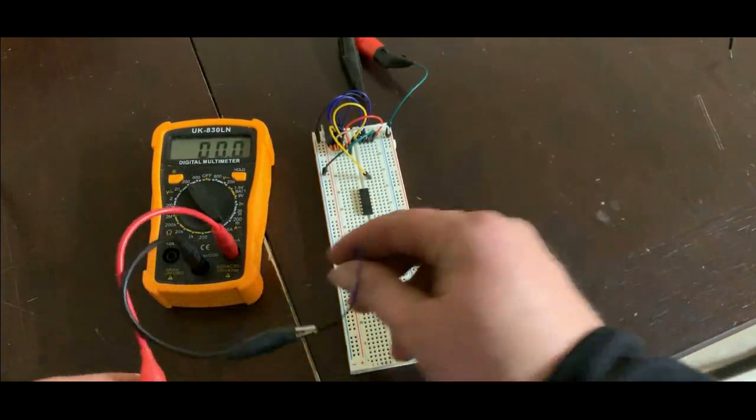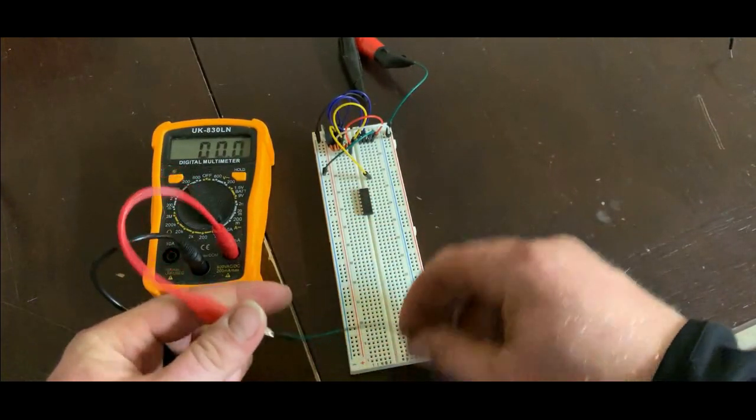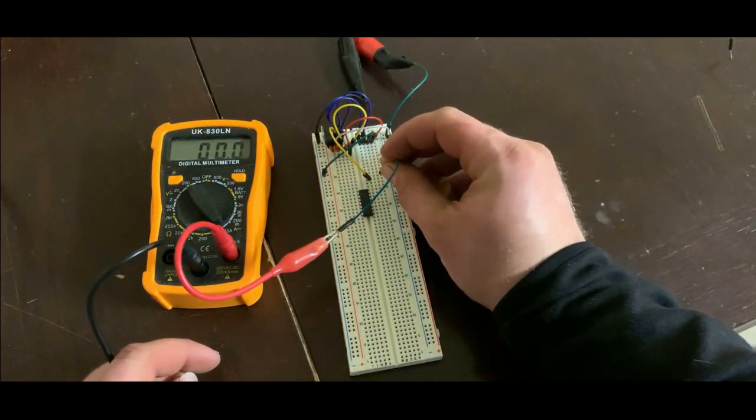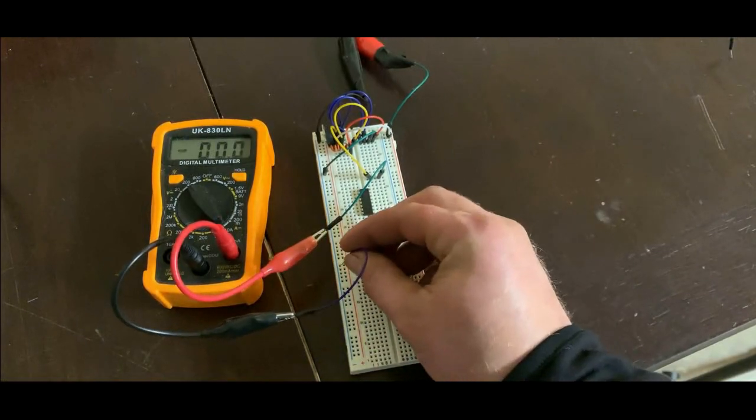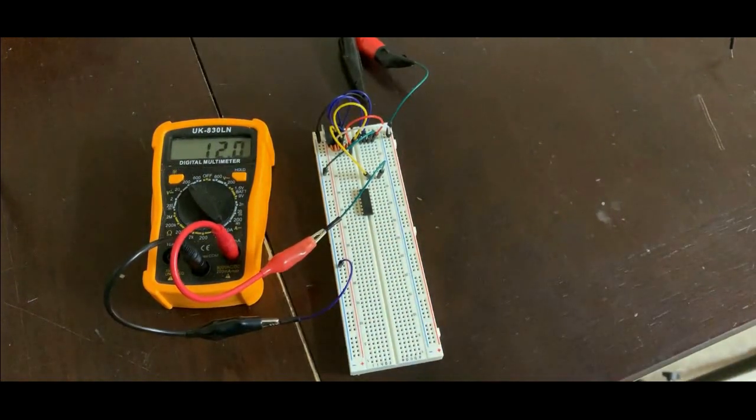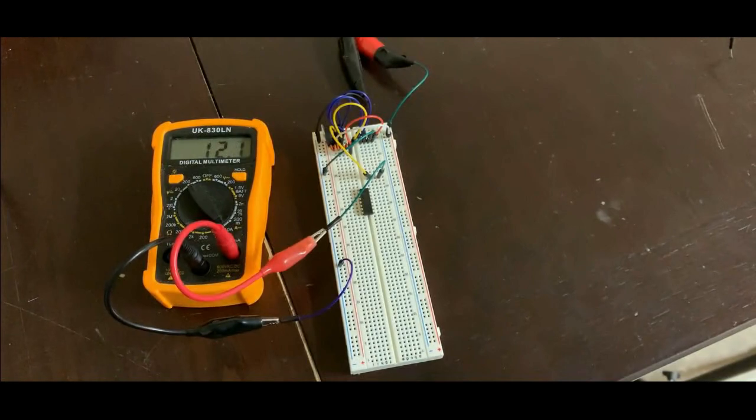The negative side in. And then I'll hook the positive to that 12-volt line that we ran earlier. Then I'll hook the negative to here. And as you can see, it's exactly 12 volts.